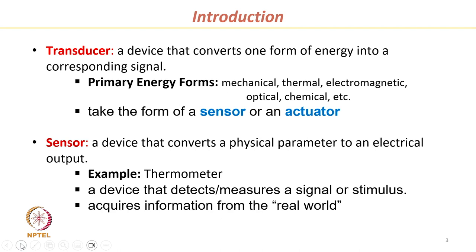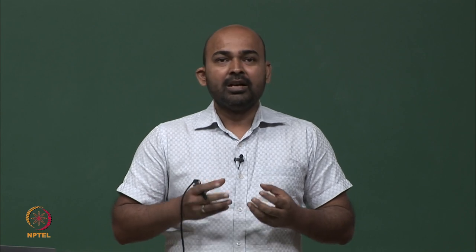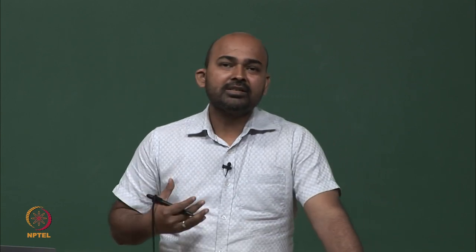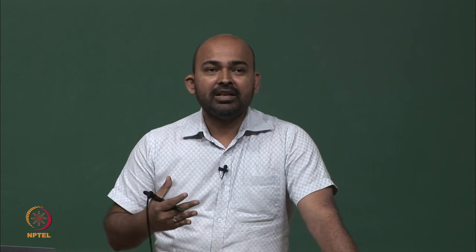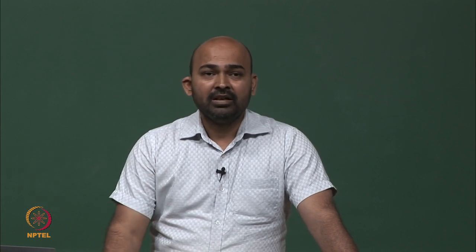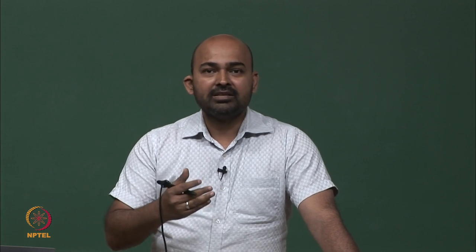A transducer takes the form of a sensor or an actuator depending upon the application. We mostly deal with sensors, because a sensor is a device that converts a physical parameter to an electrical output. The input can be mechanical, optical, or chemical, but the output is an electrical signal. We are more interested in sensors because electrical signals are easy to process using electronics, computers, and microcontrollers.